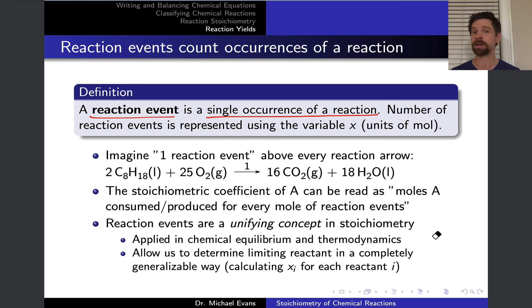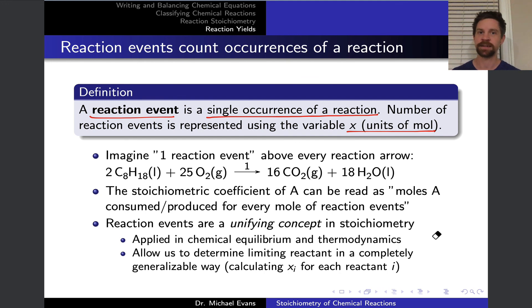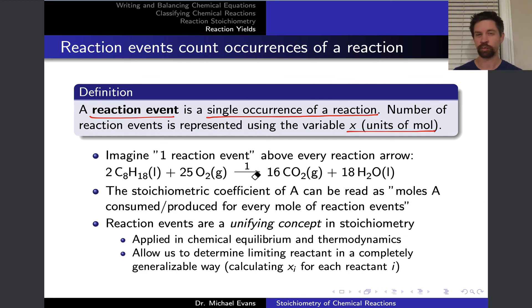A reaction event is a single occurrence of a reaction — one combination of reactants to form one set of product molecules at the molecular level. The number of reaction events is represented by the variable x, which also appears in chemical equilibrium ICE tables and in thermodynamics, where per-mole units refer to reaction events. We can imagine one reaction event sitting above every arrow in every balanced chemical equation — it's a hidden stoichiometric coefficient of one, reducing even complex reactions to a simple count.